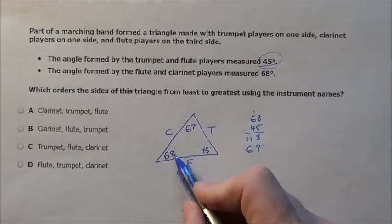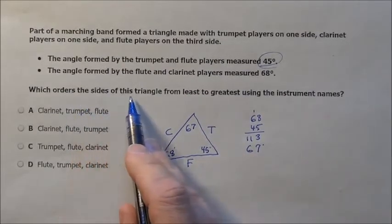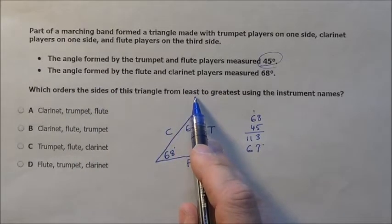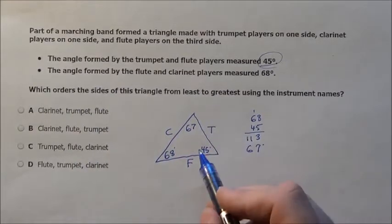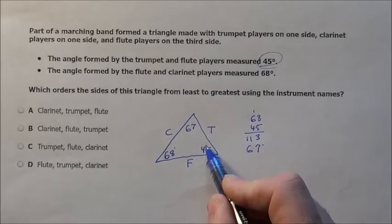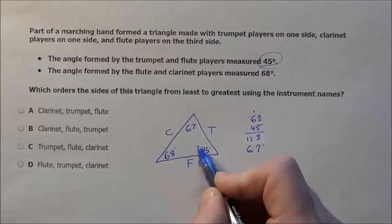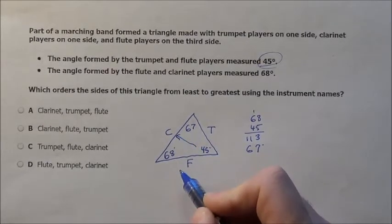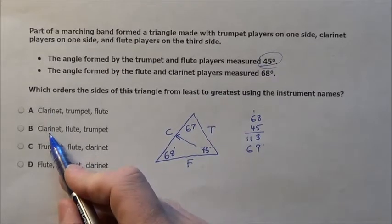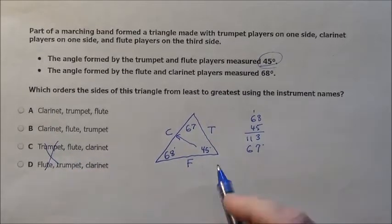So I know, this is the largest angle, and it says which orders the sides of the triangle from least, the smallest side to the greatest. So the least, the smallest side is going to be across from 45, so that's going to be clarinet. So it's going to either be A or B, we know C and D are out of the option.